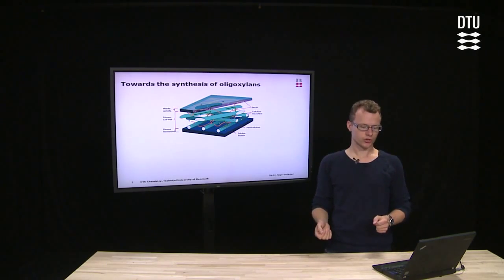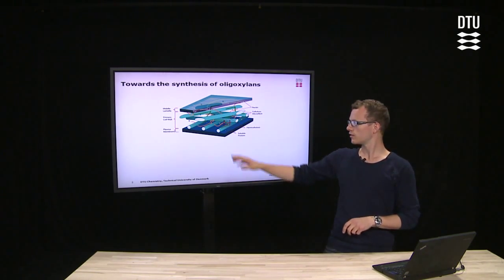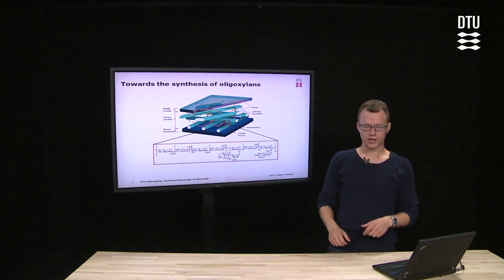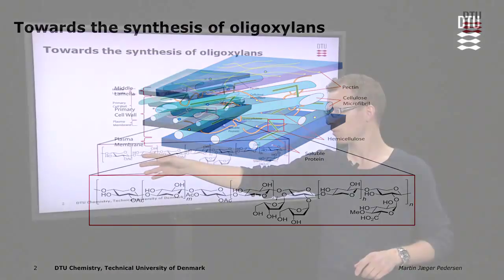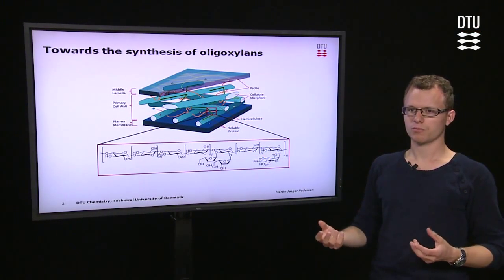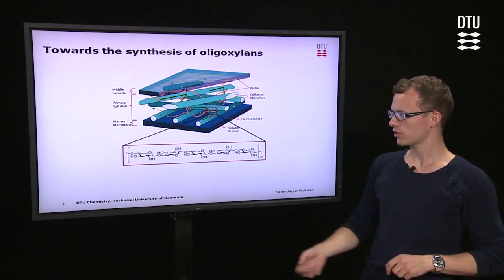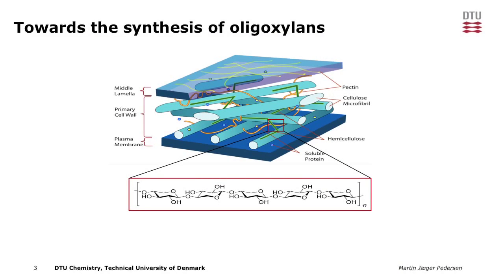My aim is just to focus on hemicellulose. So let's mark that one and enlarge it. As you see, it's quite complex and heterogeneous. In order to pick out a target that can be easily synthesized, we take this backbone, which mainly consists of xylans — so it's a polyxylan — which in smaller pieces are oligosaccharides.